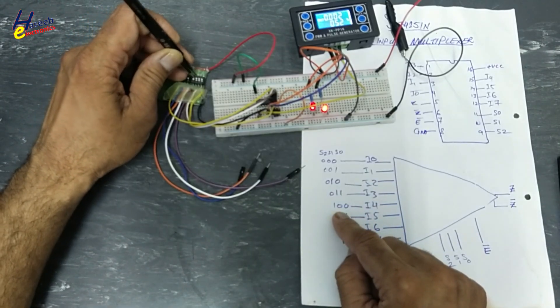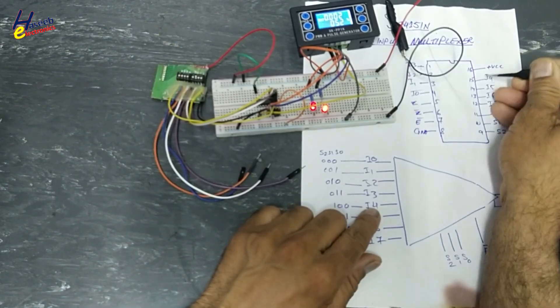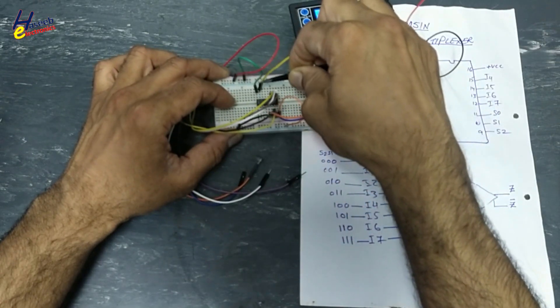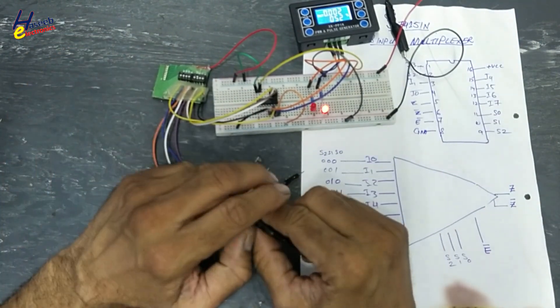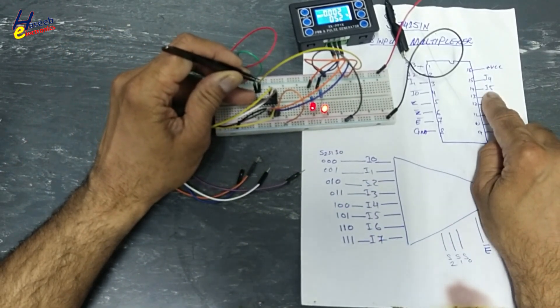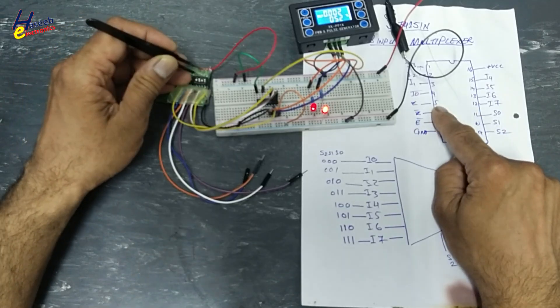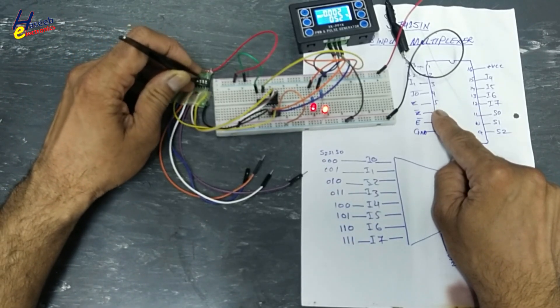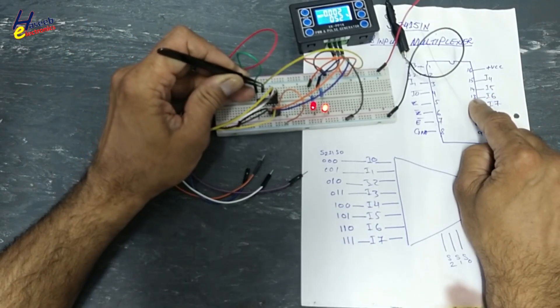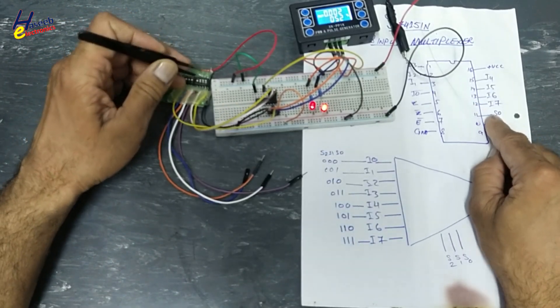Now 1, 0, 0. I4. That means pin number 15 will be connected at output side. This is pin number 15. 1, 0, 1. Pin number 14. This signal is routed to pin number 5. 1, 1, 0. I6. That is pin number 13. 1, 1, 1. I7. Pin number 12 will be connected to output pin.